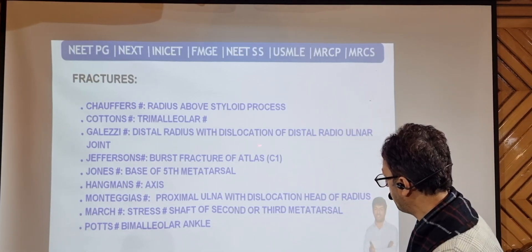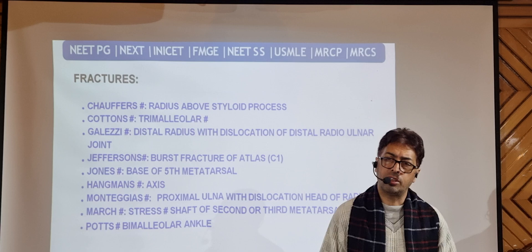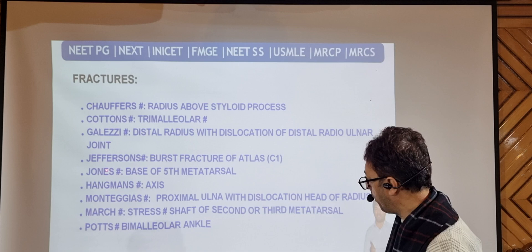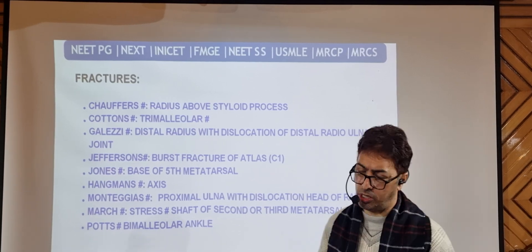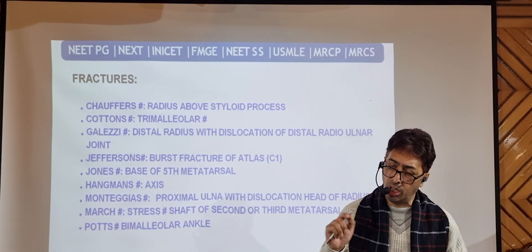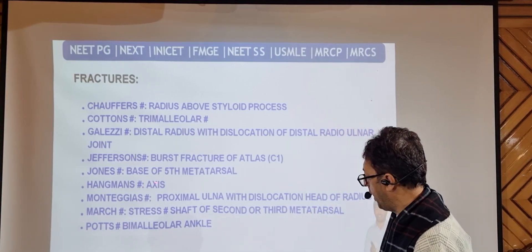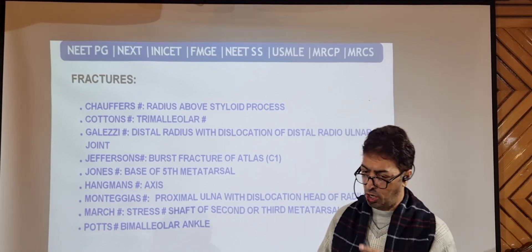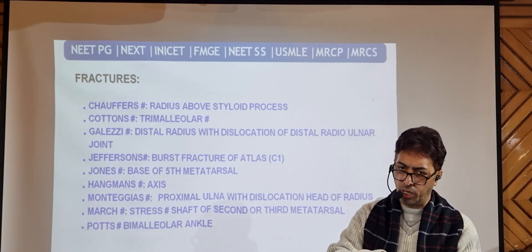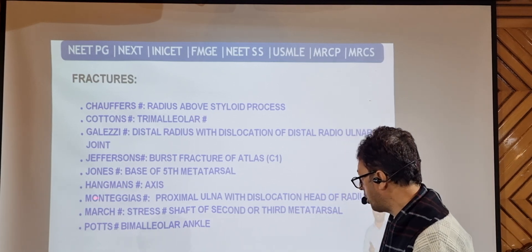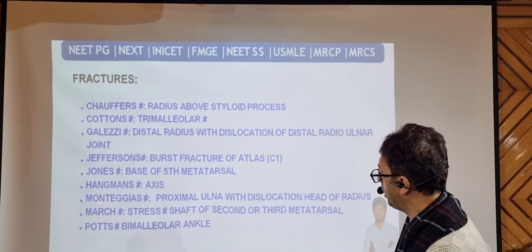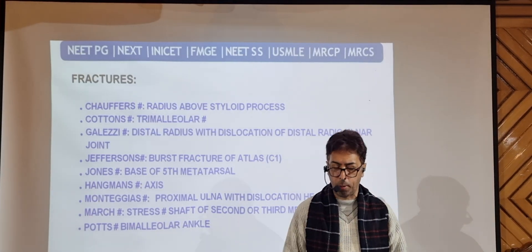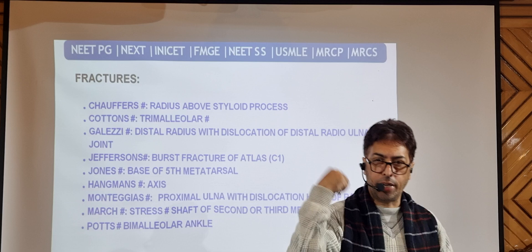Jefferson's fracture is the burst fracture of the atlas — cervical vertebra C1. Jones fracture involves the fifth metatarsal. Hangman's fracture involves the axis — C2. Monteggia fracture involves proximal ulna with dislocation of the radius — a dislocation of one bone and fracture of the other. March fracture, which is very frequently asked, is a stress fracture of the second or third metatarsal. You may be given a radiograph and asked to identify the fracture by name.